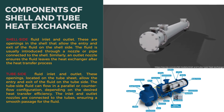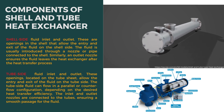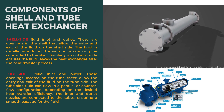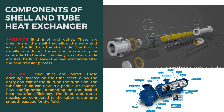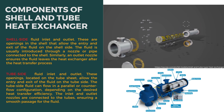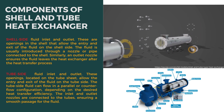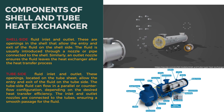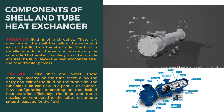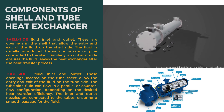Finally, we have the tube side fluid inlet and outlet. These openings, located on the tube sheet, allow the entry and exit of the fluid on the tube side. The tube side fluid can flow in a parallel or counter-flow configuration, depending on the desired heat transfer efficiency. The inlet and outlet nozzles are connected to the tubes, ensuring a smooth passage for the fluid.